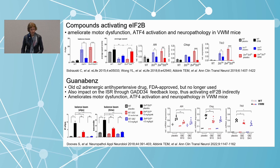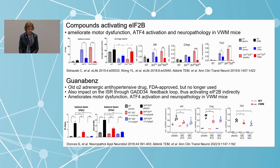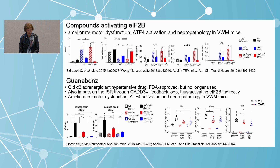Guanabenz is an old alpha-2 adrenergic antihypertensive drug. It impacts the ISR through the GADD34 feedback loop, thus activating EIF2B indirectly. That also works in mice: it ameliorates motor dysfunction, decreases ATF4 activation, and improves neuropathology in Vanishing White Matter mice. Here you have the slips on the balance beam — this is the untreated VWM mice, and these are the treated VWM mice, with a weekly dose and a daily dose. ATF4 goes down, CHOP goes down, Tribbles3 goes down. So Guanabenz is also effective in mice.